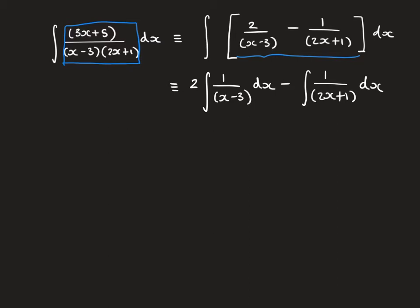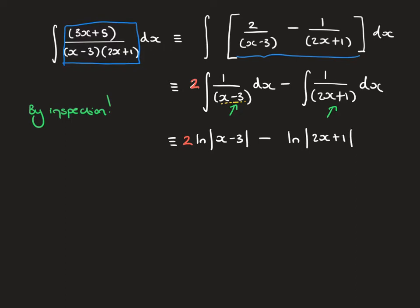I can now integrate both of these by inspection. Being able to integrate simple functions quickly by inspection is very useful. Notice there's a linear function in each case, so integration is very straightforward. This factor of 2 remains as part of the answer. We get ln mod x minus 3, and we need to divide by the derivative of the inner function, but the derivative of x minus 3 is just 1, so that does not affect the answer. For the second integral, we just have ln mod 2x plus 1, divided by the derivative, which gives a factor of one half. Then plus a constant.